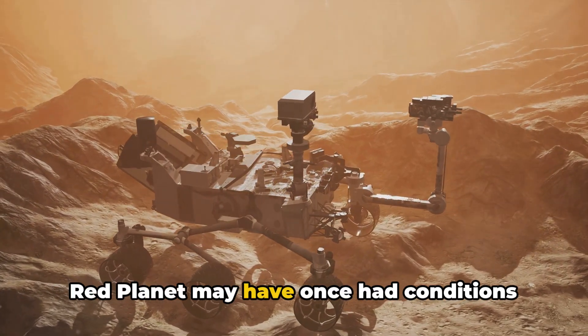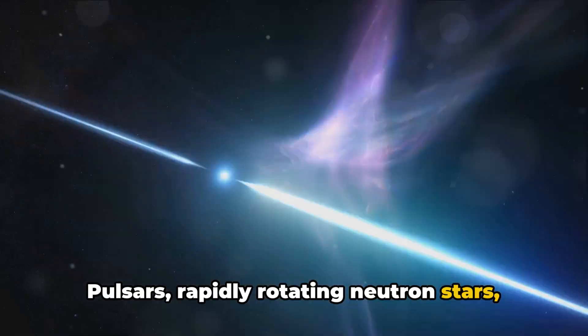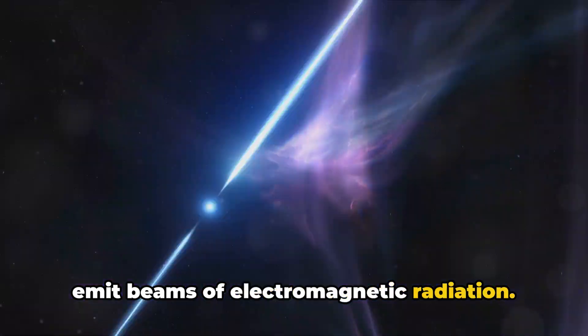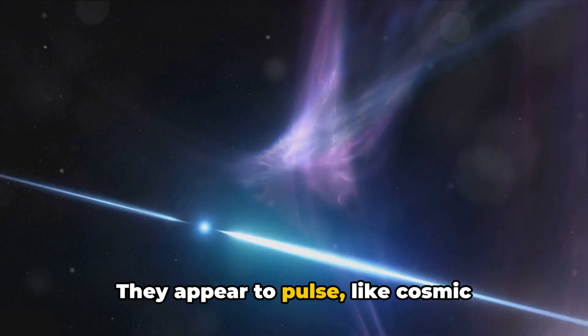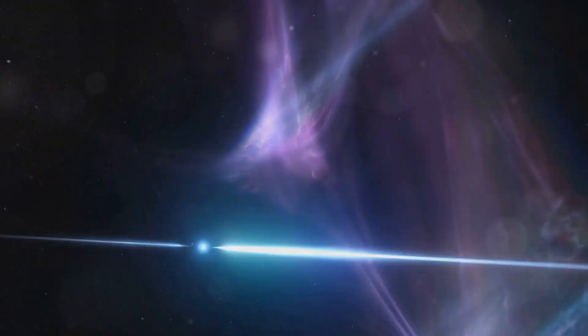Pulsars, rapidly rotating neutron stars, emit beams of electromagnetic radiation. They appear to pulse like cosmic lighthouses as their rotation sweeps the beams across Earth's line of sight.